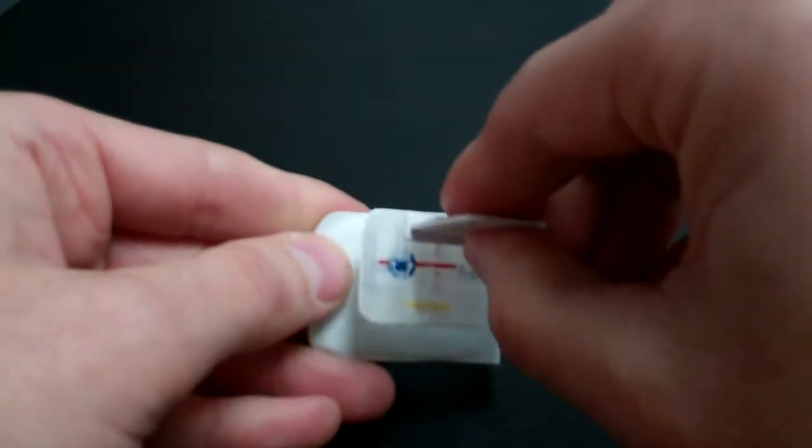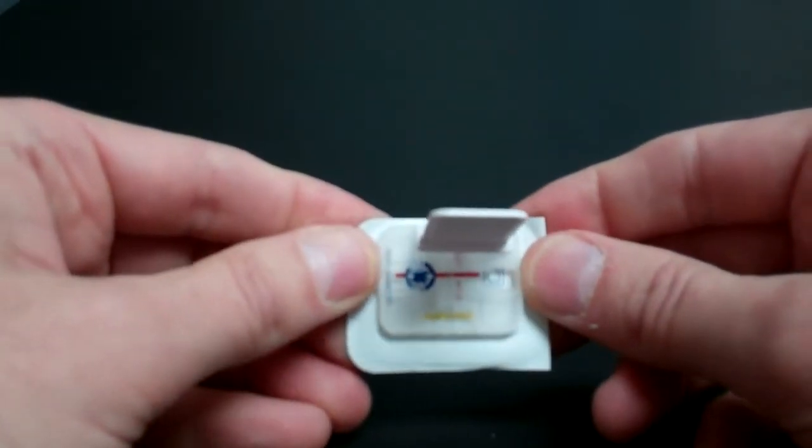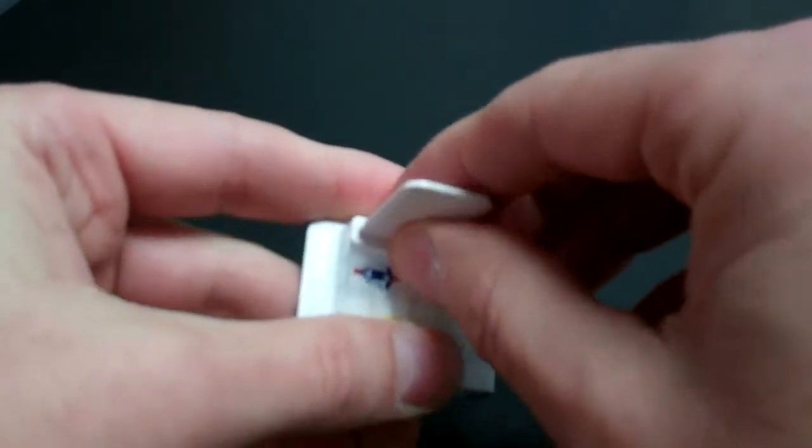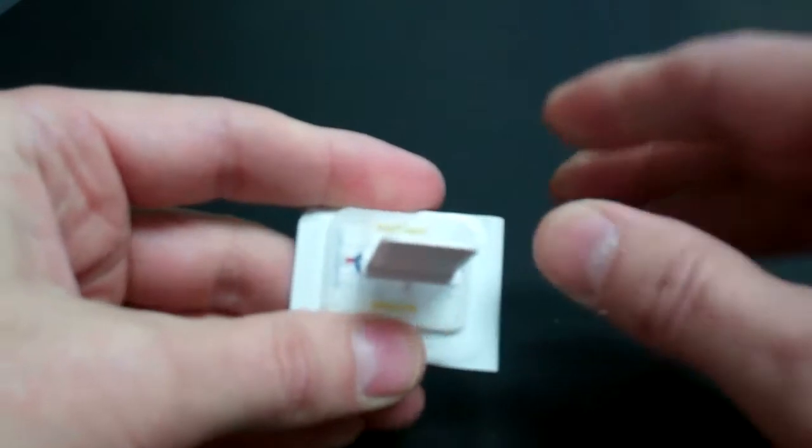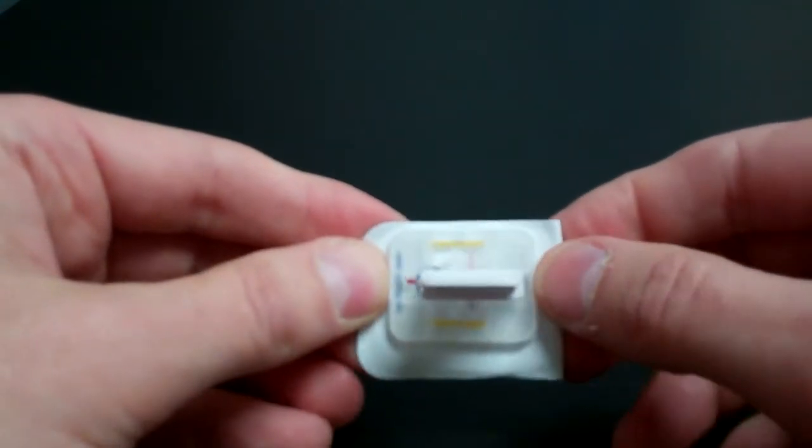So if you wanted to do this particular horizontal periapical indication you would stick it on there, and for a bite wing you would just adjust the tab down into the center and you're ready for a bite wing.